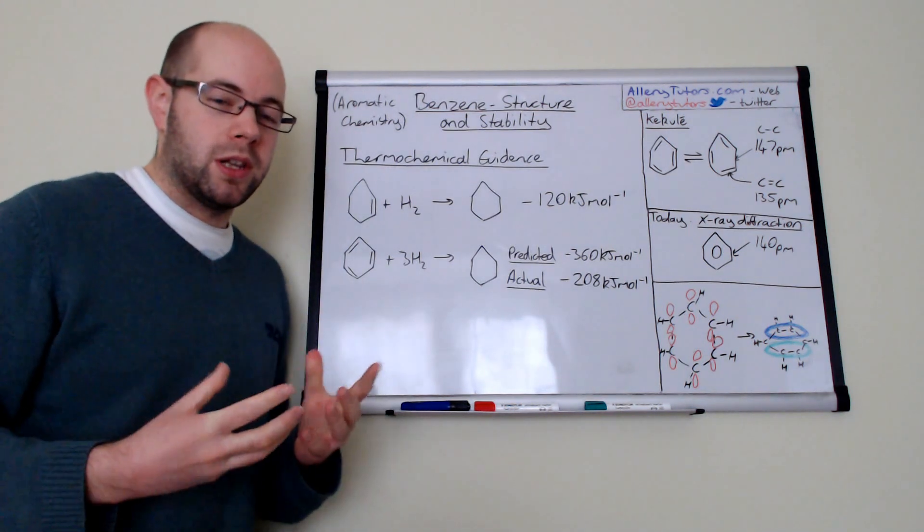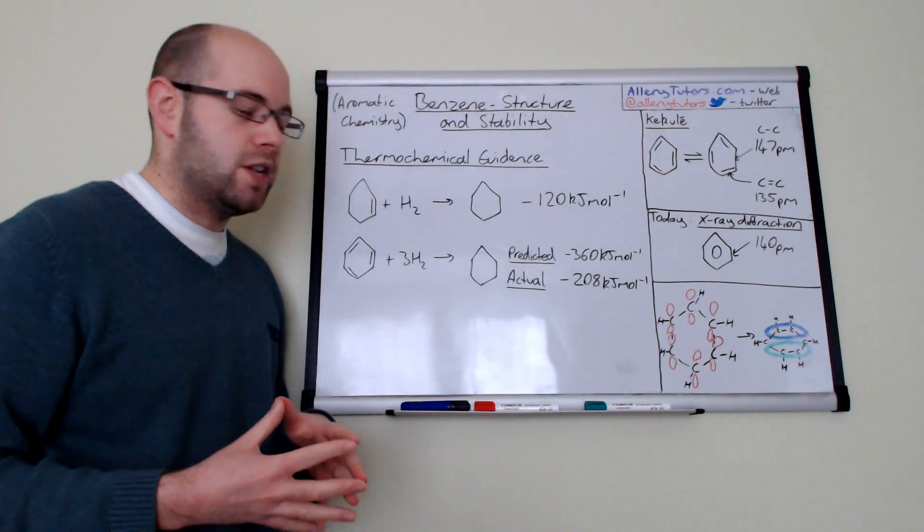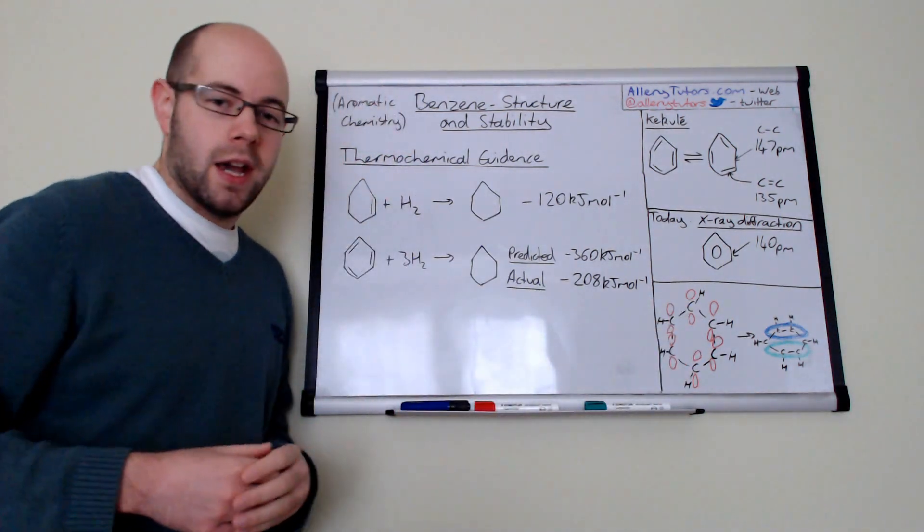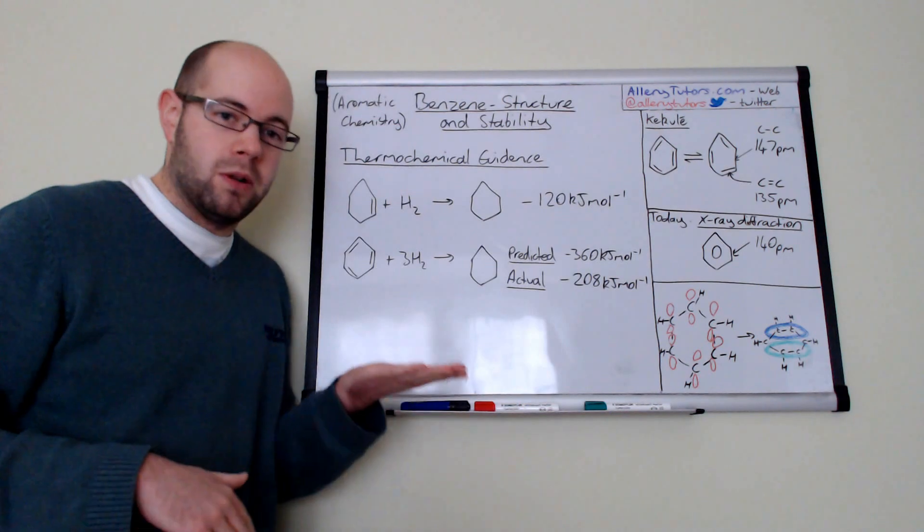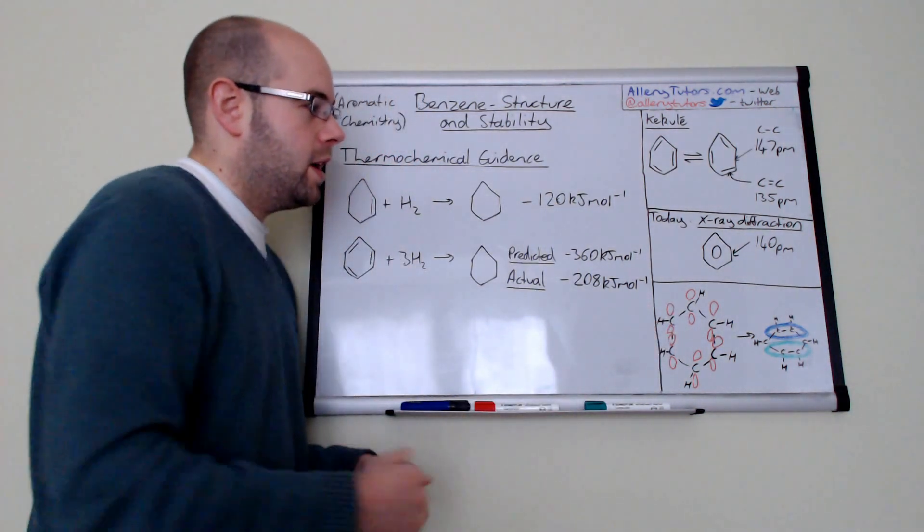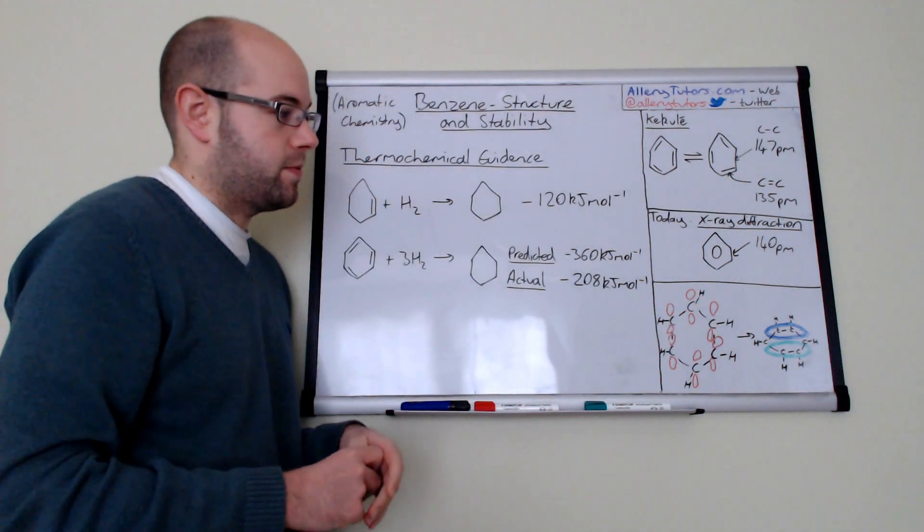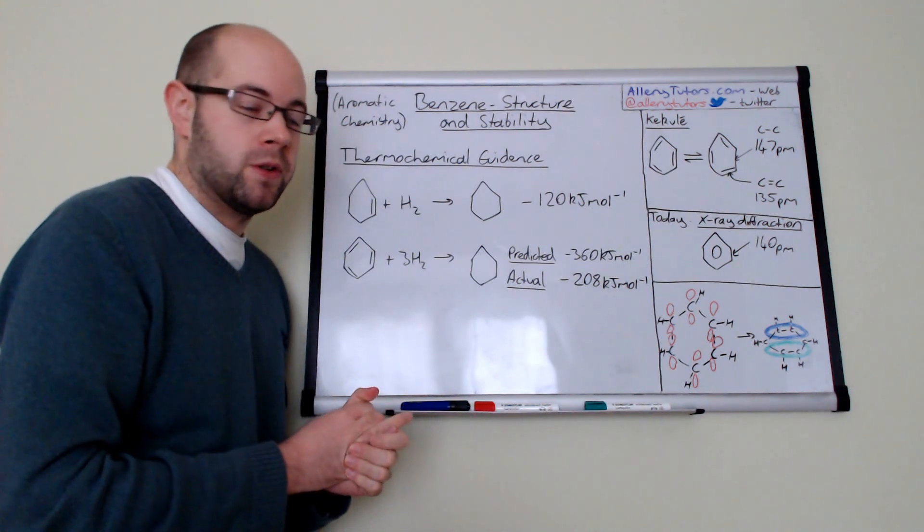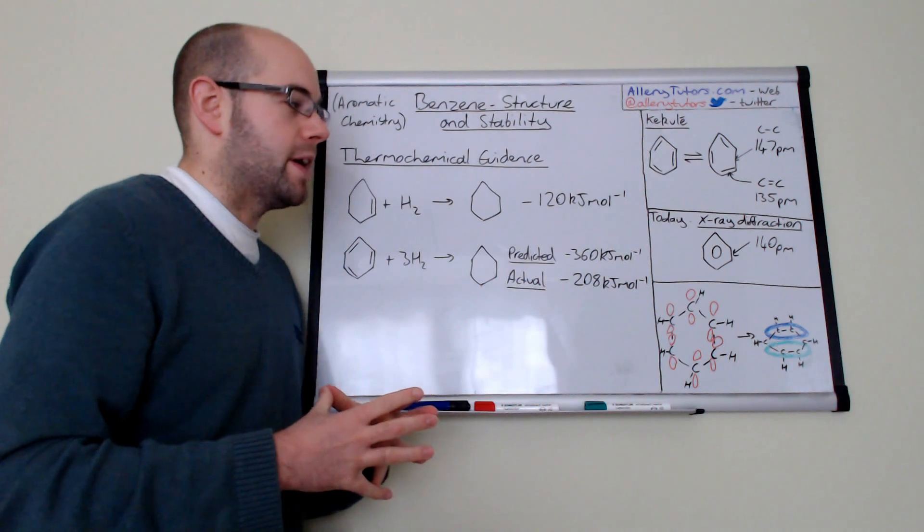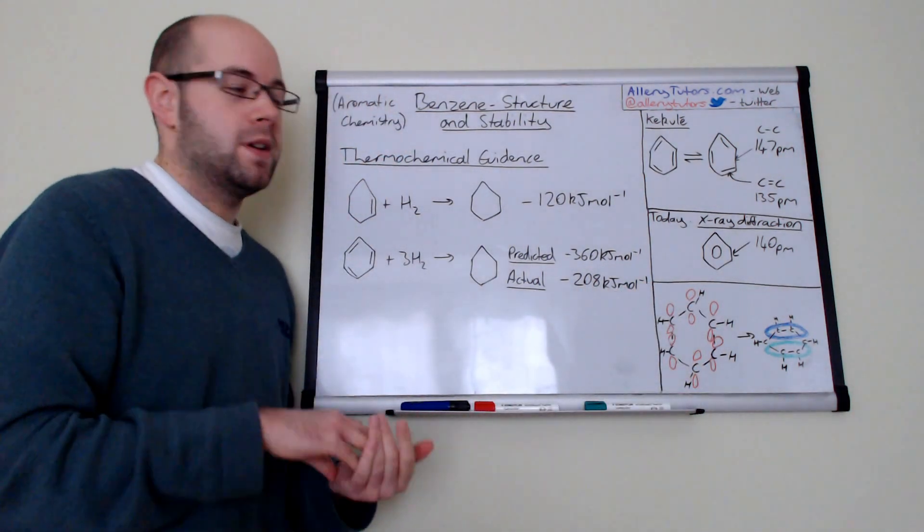The only model that could actually fit that was this one here, and this is the new model that we have today which is a delocalized pi system. Effectively what you've got is six carbons and each carbon has hydrogens. The whole molecule is flat, it's a planar molecule. You can see here that we've got some p orbitals which are left over. These are three orbitals where the electrons are not involved in any bonding. What it can do because of the structure of benzene is very unique, and it can actually delocalize some of these electrons in a bit like of a donut system.